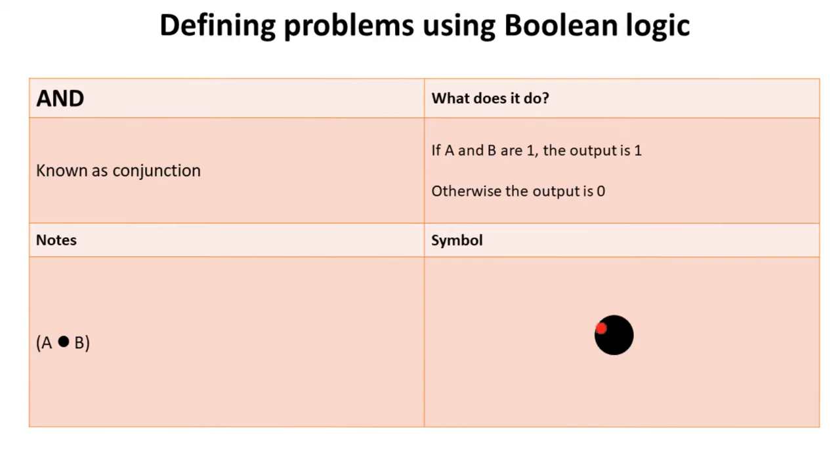The symbol used for this is a circle or dot. You can see here, written as Boolean logic, we have A and B.